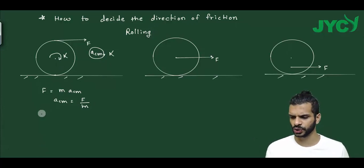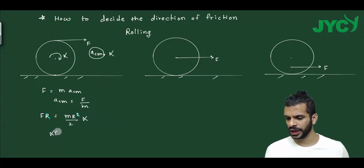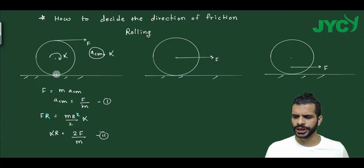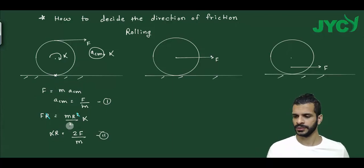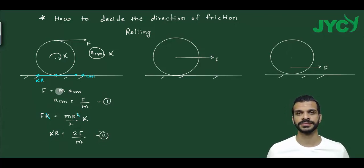Torque about center of mass equals F times r, which equals moment of inertia about center of mass, that is mr²/2, times alpha. So r cancels and alpha times r equals 2F/m. Now, acceleration of center of mass is F/m, and alpha·r is 2F/m. Obviously alpha·r is greater than acceleration of center of mass.